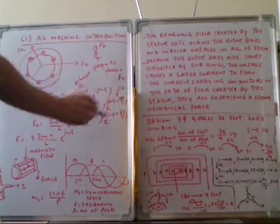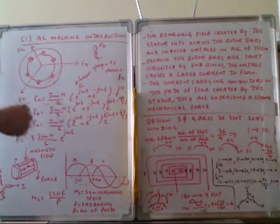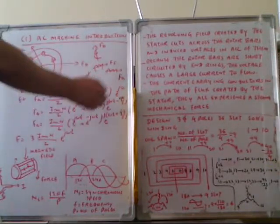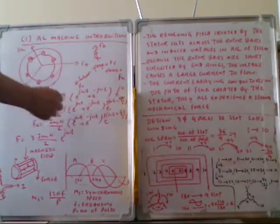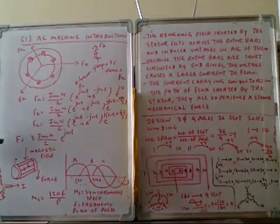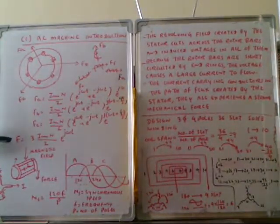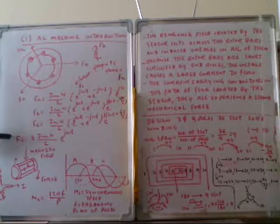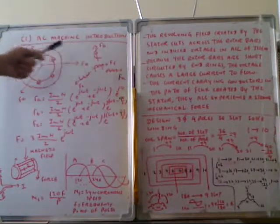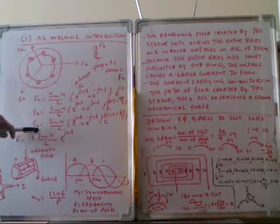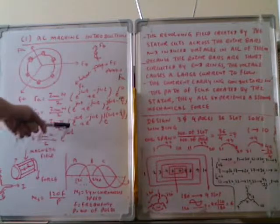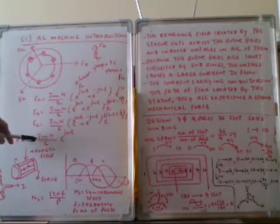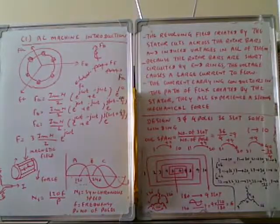The force FA, FB, and FC is produced by the current and the number of turns N is calculated this way. Therefore, generally we can write down the equation for the magnetic force produced by the current flowing into the stator winding. It's 3 times IM times N by 2 e power j omega t. IM is the magnetizing current and N is the number of turns.